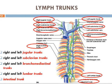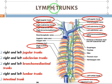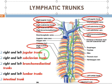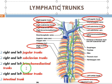We have read about lymphatic trunks. In our body there are five types of lymphatic trunks: right and left jugular, right and left subclavian trunk, right and left bronchomediastinal trunk, right and left lumbar, and then the intestinal trunk.